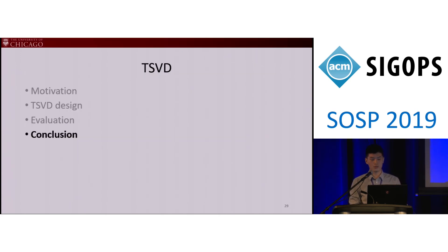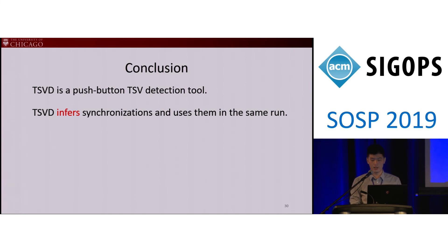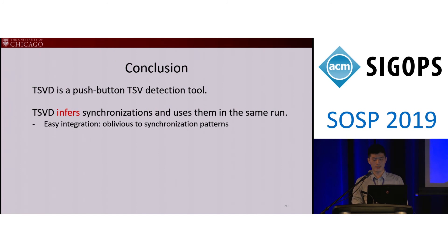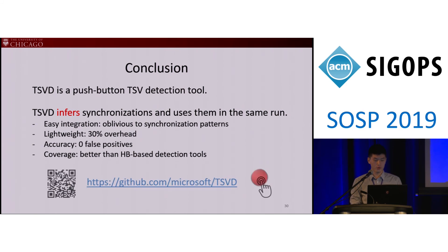To conclude: TSVD is a push-button thread safety violation detection tool. It infers synchronization and uses it within the same run. The tool is easy to integrate because our technique is oblivious to synchronization and concurrency patterns. It's also lightweight — only 30% runtime overhead — and accurate. The evaluation shows TSVD has better coverage than happen-before-based tools. You can find an open-source version of TSVD at the link shown, and we welcome you to try it and let us know how many bugs you find.